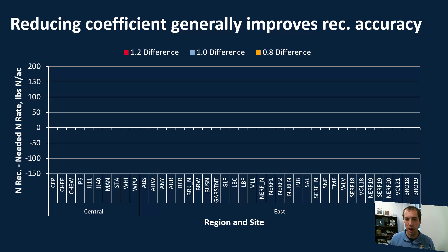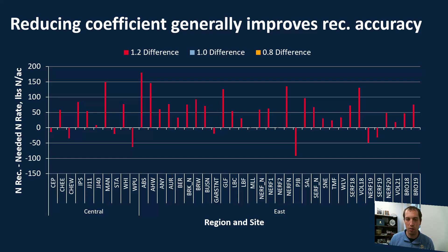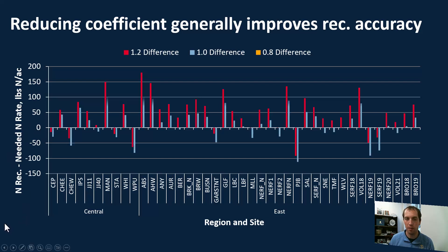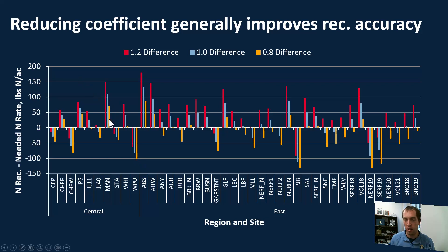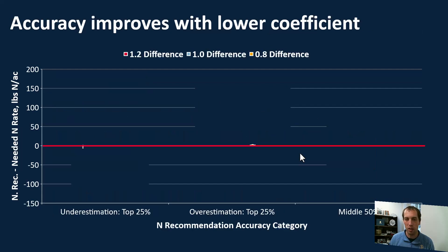Now we're going to look at the difference between recommendations using multipliers of 1.2, 1.0, and 0.8, subtracted from the nitrogen actually needed. First with 1.2 as we've seen, then looking at whether 1.0 gets the blue line closer to that zero mark. We see that sites overestimating nitrogen needs do get closer to zero with 1.0, but sites already underestimating move further away. With 0.8, some overestimating sites get closer, but others actually cross below zero, and underestimating sites move even further. So we then split the data into three groups.